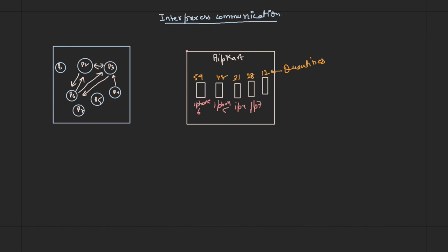Assume there are two or three people trying to buy the iPhone 6. A person named Rakesh is trying to buy this phone, Suresh is also trying to buy this phone, and a girl named Bhumika is also trying to buy it. When they all try to buy the same phone, it can create complications.